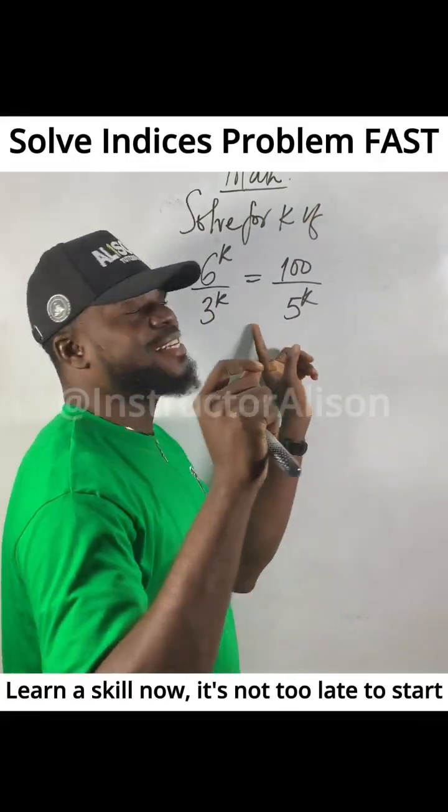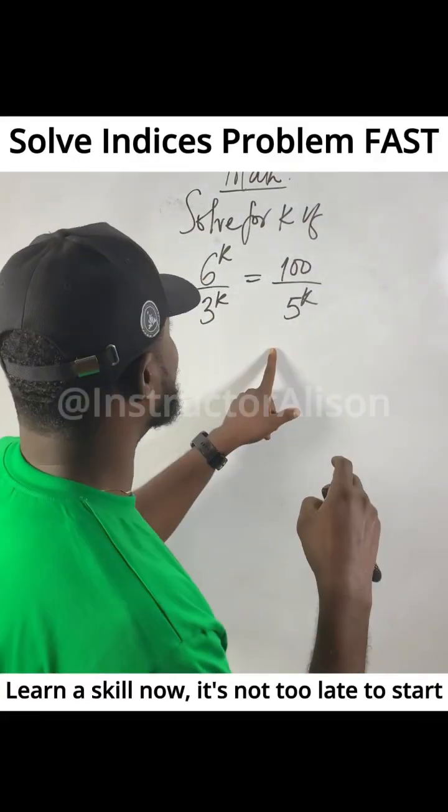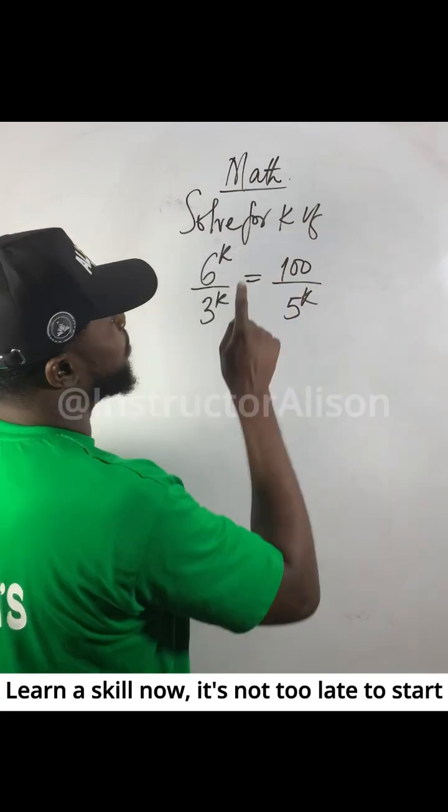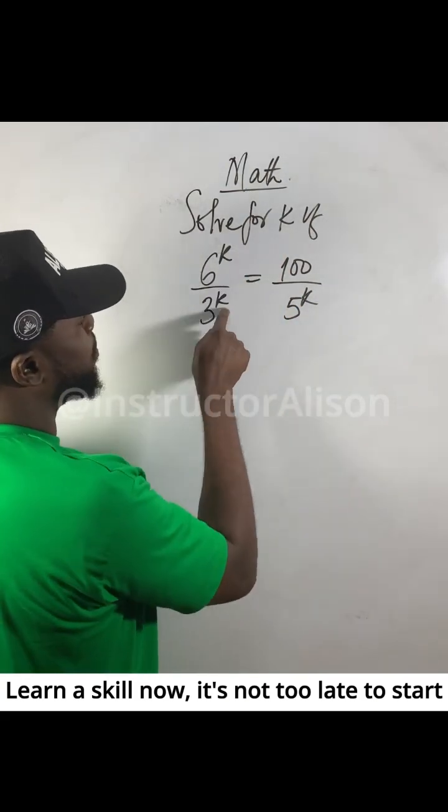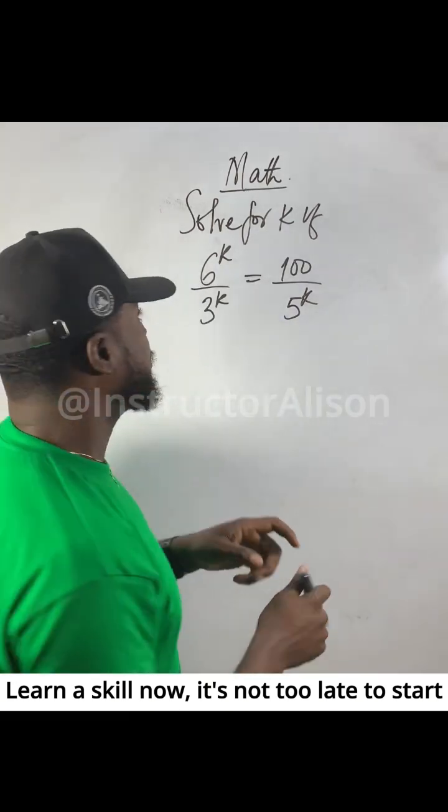I'm going to solve this question. Let me define this and solve for k. If 6 to the power of k over 3 to the power of k equals 100 over 5 to the power of k, it's simple.